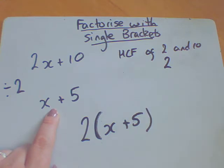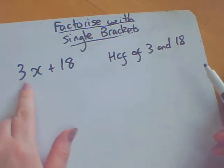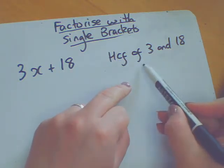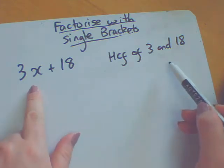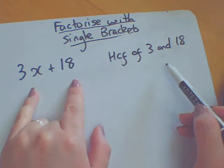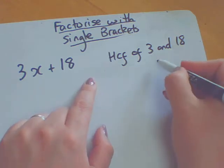Let's have a go at the second one. Okay, so my question is 3x plus 18. That's what I want to get into brackets. And the question I'm asking myself is the highest common factor of 3 and 18. I'm not worrying about the x because there's no x in this 18. So I don't have to worry about that. So the highest common factor of 3 and 18 is 3.